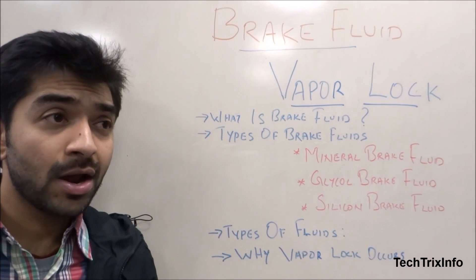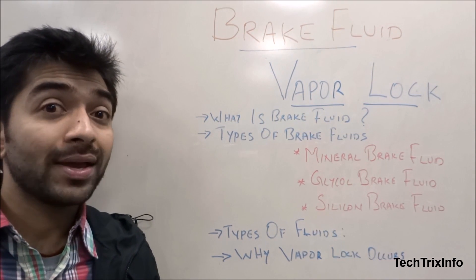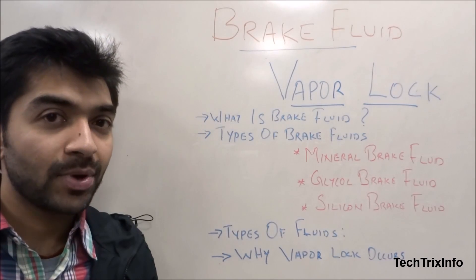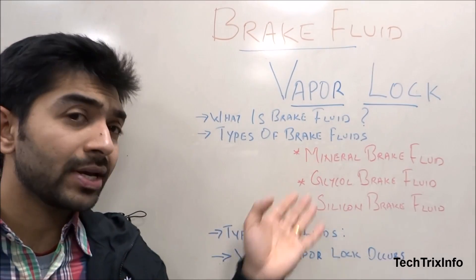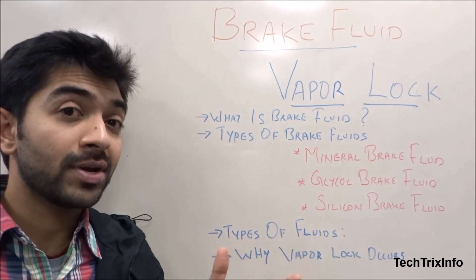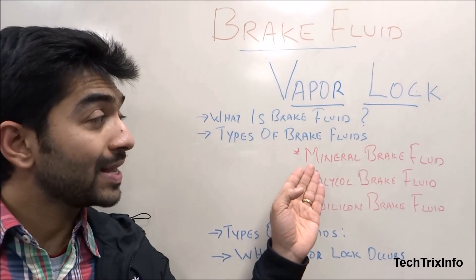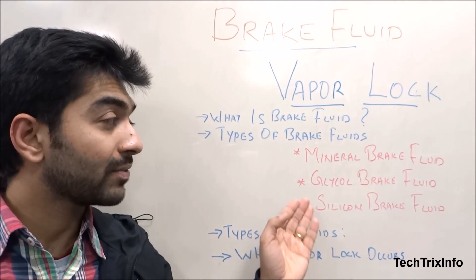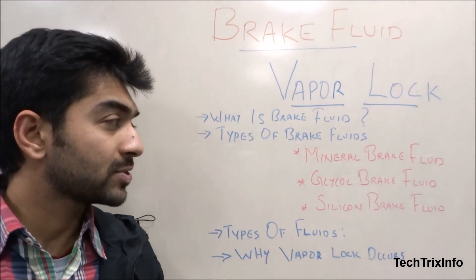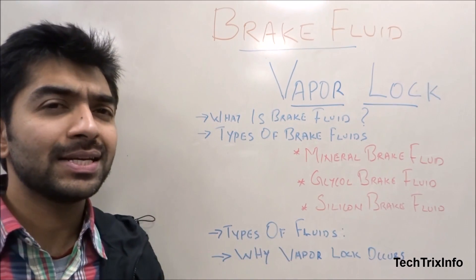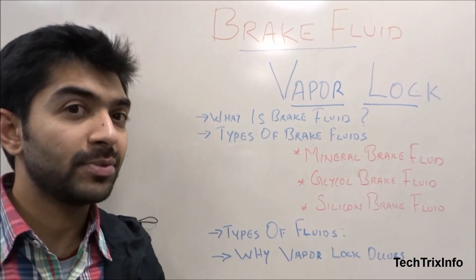If you're having a car or if you have seen a construction machine, these types of vehicles have a hydraulic brake system which employs brake fluid. There are mainly three types of brake fluids used in the brake system: one is mineral brake fluid, the other is glycol brake fluid, and the third one is silicone brake fluid. The most commonly used — about 90 to 95 percent — is the glycol brake fluid.